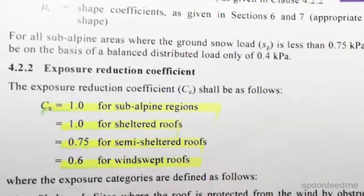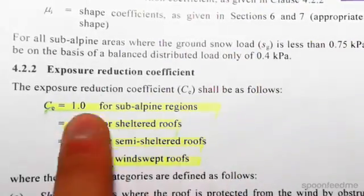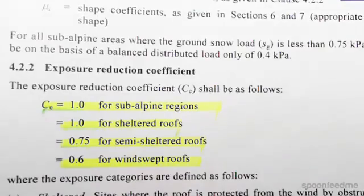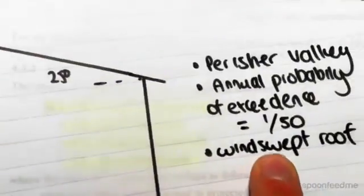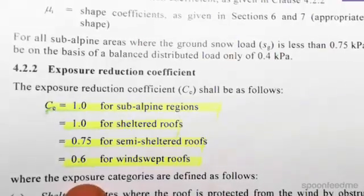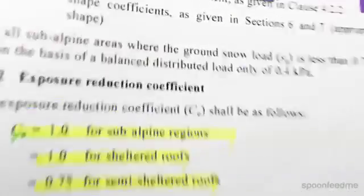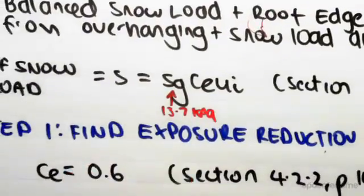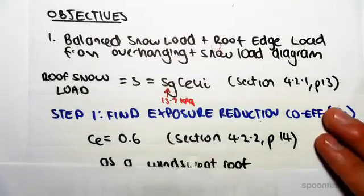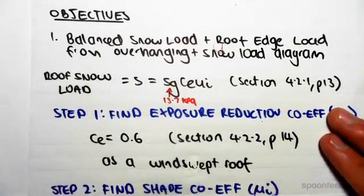Okay, so we have exposure reduction coefficient Ce shall be one of these values. We were told in the question we have a windswept roof, okay, which means that our Ce value is going to be 0.6 for windswept roof. All right, so C subscript e is 0.6 as we have a windswept roof. Now we need to find the